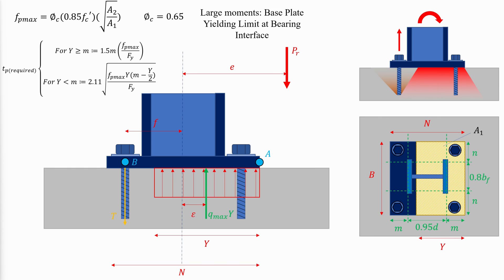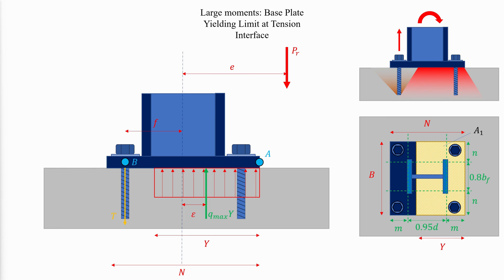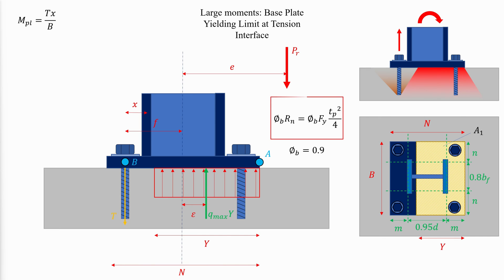For the case of large moments, the required plate thickness may be determined from either equation based on the value of Y. The tension force T in the anchor rods will cause bending in the base plate. Cantilever action is conservatively assumed with the span length equal to the distance from the rod centerline to the center of the column flange X. The required bending strength of the base plate per unit width can be determined, and setting the available strength equal to the applied moment provides an expression for the required plate thickness.